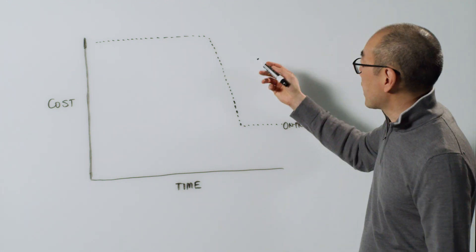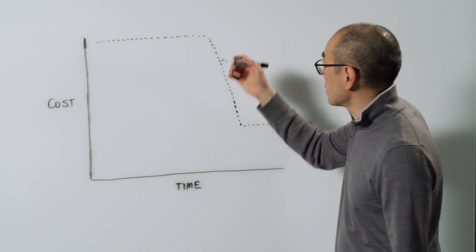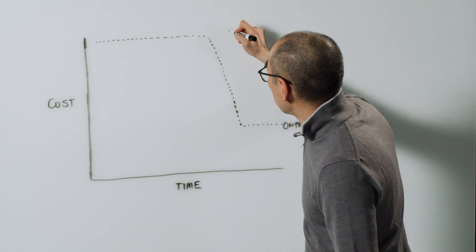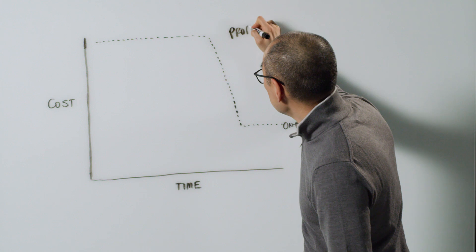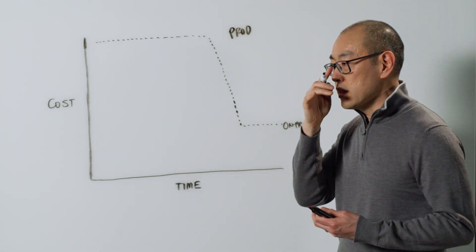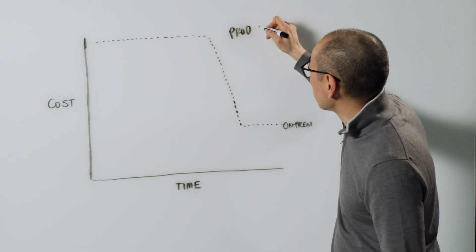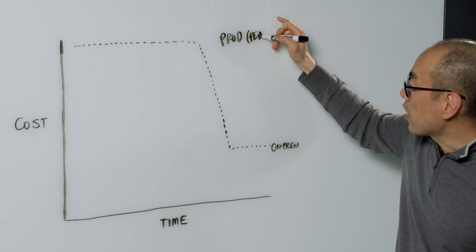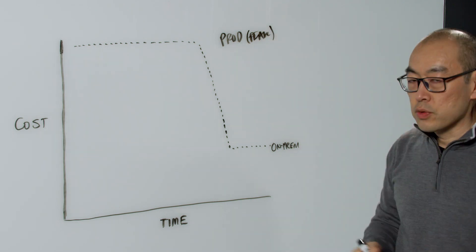When you're purchasing that asset, typically you're purchasing for your production environment - the peak amount of demand that you're required to support.